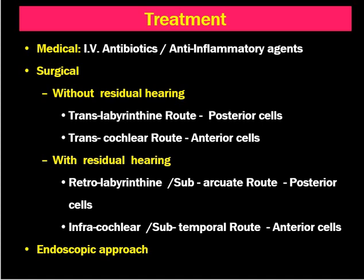How do we treat Gradenigo's syndrome? If it is simple inflammation, it is treated with broad-spectrum high-dose IV antibiotics and anti-inflammatory agents. Surgical treatment depends upon the pattern of residual hearing. If there is no residual hearing — i.e., if the patient has sensorineural hearing loss — we can approach through the translabyrinthine route for posterior cells or the transcochlear route for anterior cells. When the patient has residual or near-normal hearing, we opt for the retrolabyrinthine or sub-arcuate approach for posterior cells, and the infracochlear or subtemporal approach for anterior cells, aiming to preserve residual hearing.